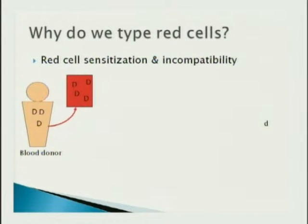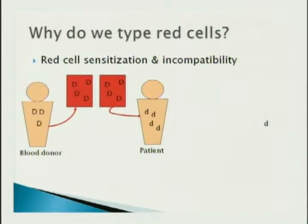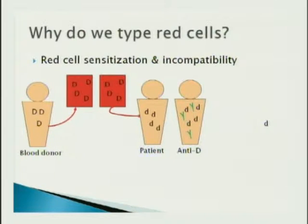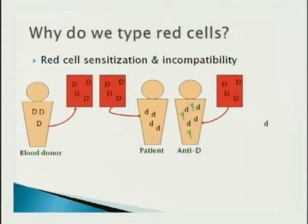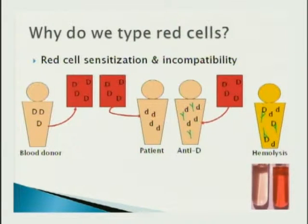Why do we type red cells? It's really for the purpose of transfusion or incompatibility. If a blood donor is D positive and donates a unit, those red cells will have D on them. If transfused to a D-negative patient, over time that person could make anti-D antibody. Then in the future, if given another unit with D on those red cells, you can have a hemolytic transfusion reaction. This is also the idea behind maternal-fetal incompatibility, and what can happen if the antibody crosses the placenta.